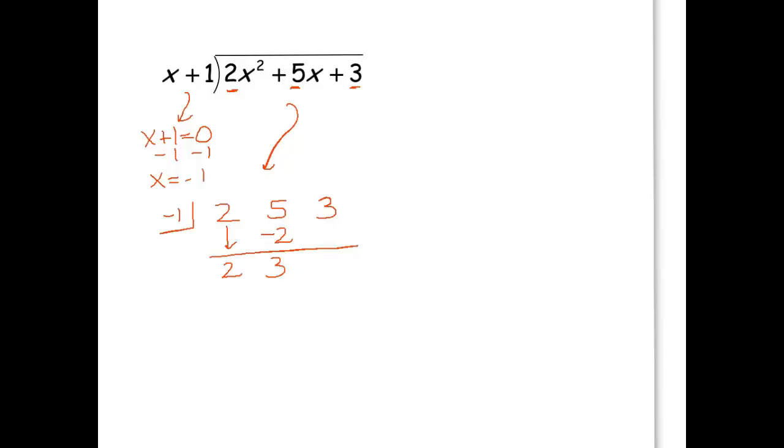Now I'm going to do this process again. This number here is 3 times negative 1 is negative 3. Add those up, and you get 0.